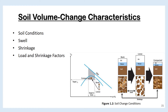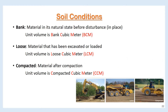In soil volume change characteristics, we consider soil conditions: swell, shrinkage, and load and shrinkage factor. All soils have three components: air, water, and solid or soil grains, as shown in figure 1.2. Three phases and terms used in the construction industry are the bank, the loose, and the compacted, in units of cubic meters. The bank is material in its natural state before disturbance, in place, and the term bank cubic meter, BCM, is used to identify all soils in that location.